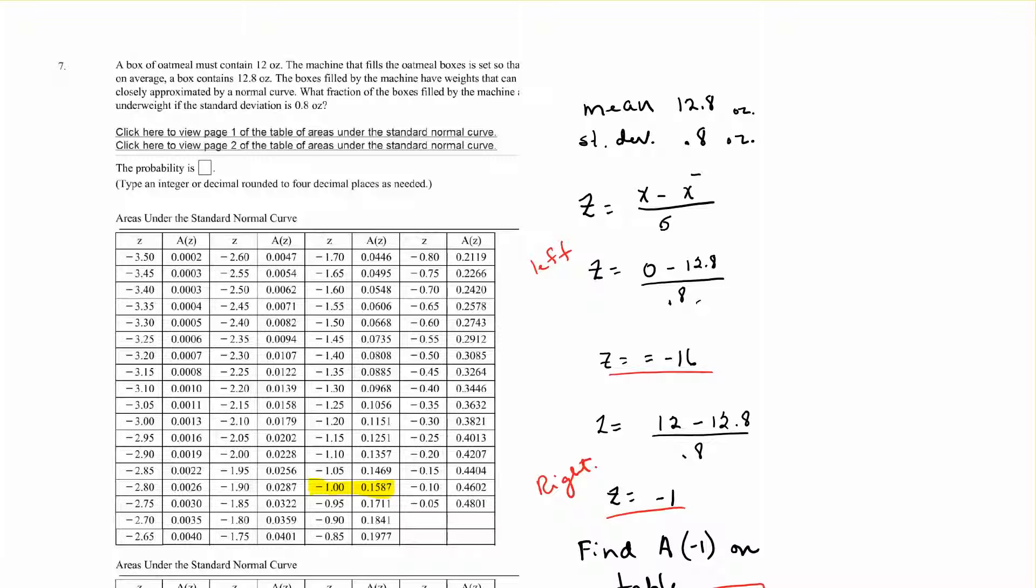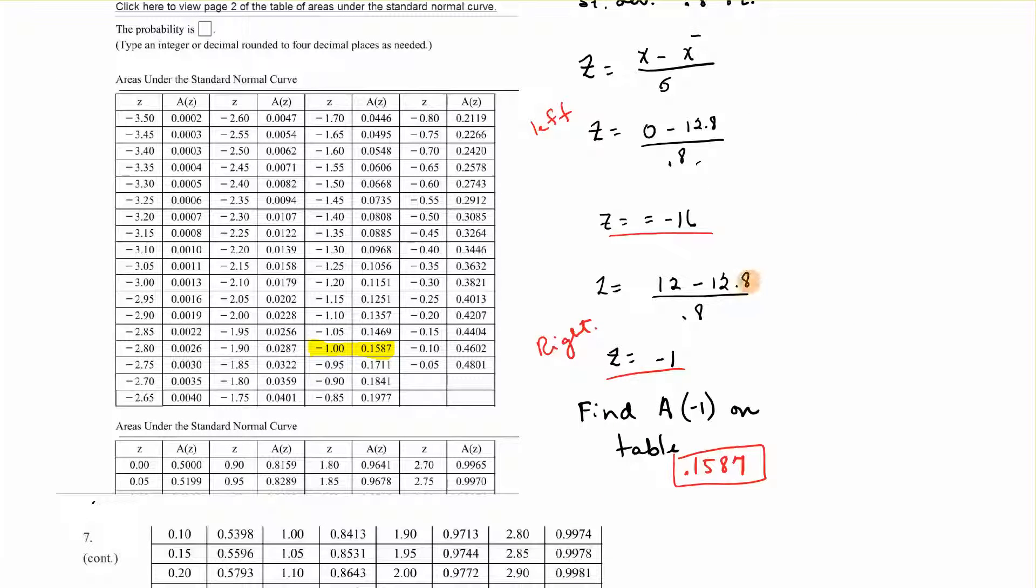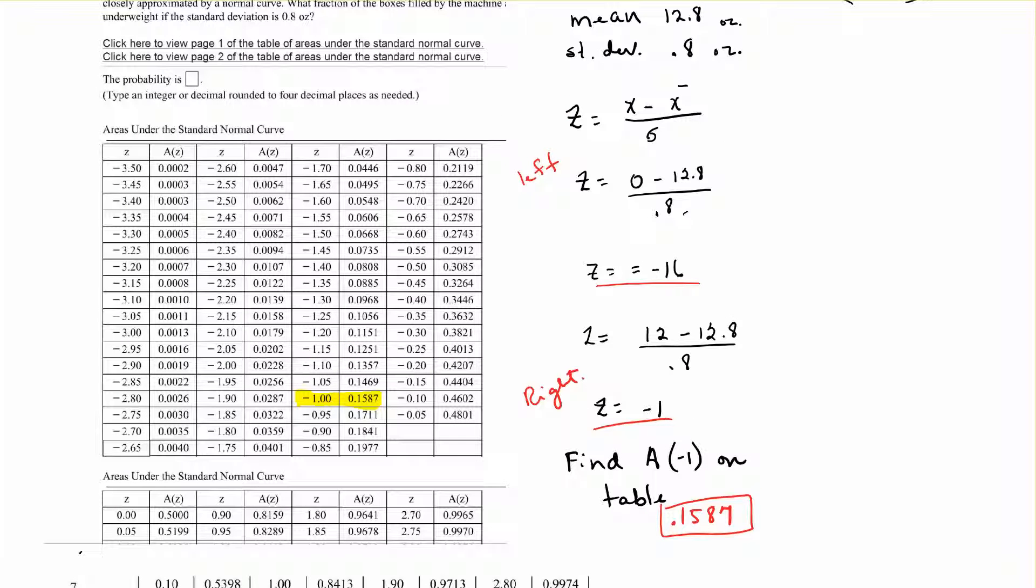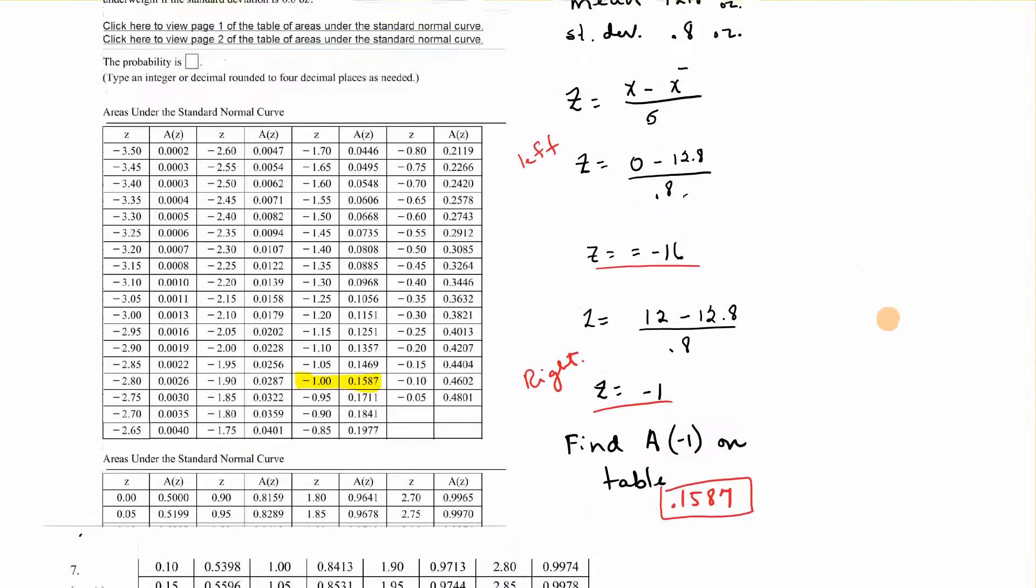From the left, 0 minus 12.8 over 0.8 is going to give us a negative 16, so we have a z-score of negative 16 there. From the right, we're starting at 12 because it has to contain 12. 12 minus 12.8 over 0.8 gives us a z of negative 1. We have two z-scores, the left and the right. A z-score of negative 16 is going to give us an area of essentially 0. We want to look at the z-score of negative 1. When we look at negative 1, we're going to get 0.1587 under the area. That is our probability, 0.1587.